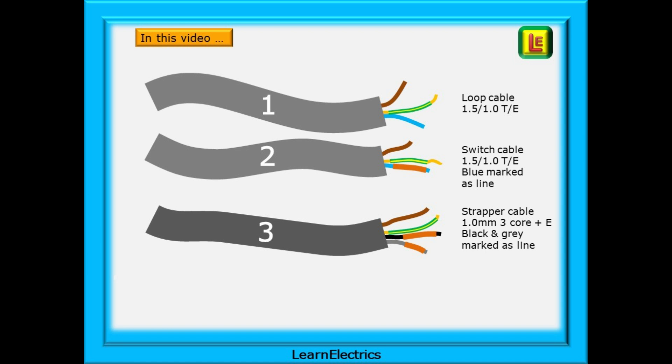Cable 3 is 1 millimeter 3 core plus earth strapper cable for use between the two switches. Again, in keeping with good working practice, the black and grey are both marked with brown sleeving.